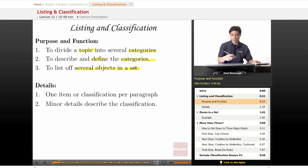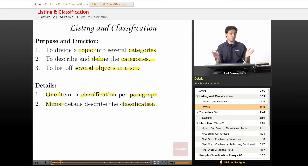When you're going into your details, it's usually one item or classification per paragraph. And then these minor details are usually describing that classification or giving specific examples of that type of classification. For instance, if I said computer electronics, I might say iPod as an example of computer electronics. Or if I was to say mobile device and said iPod, that's an example of a mobile device.